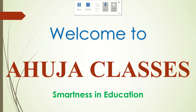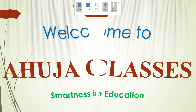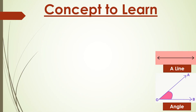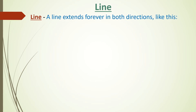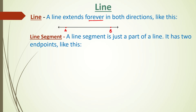Hello students, welcome to Aouja Classes — Smartness in Education. Today we are going to learn about the basics of lines and angles. A line is a geometrical entity which can be extended forever in both directions. As shown in the figure, two points A and B have been assumed and the line can be extended in both directions infinitely.